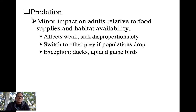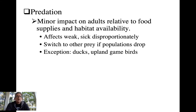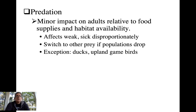Predation is a potential density-dependent factor, but it tends to have a minor impact on adults compared to density-dependent factors like nest site availability, food availability, and competition for quality habitat. Predators will tend to pick off weak or sick individuals that may have died anyway, so they're not really adding to population regulation. If the population gets low, predators may switch to other prey species. One exception is ducks and upland game birds — predation does play a very large role in regulating their populations.